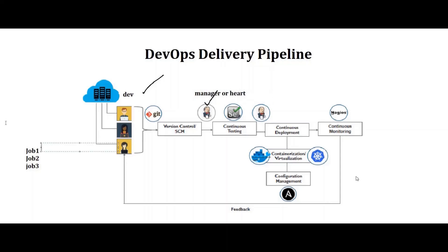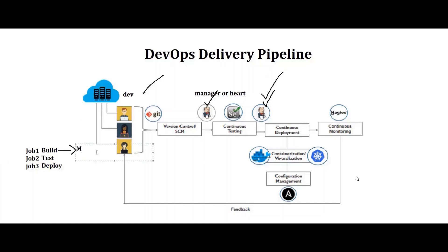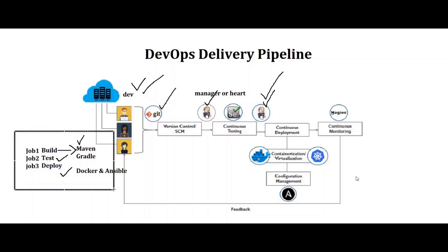In Jenkins, you can create jobs such as build, test, and deploy. Jenkins itself does not perform these tasks — rather, via Jenkins, we build using a build automation tool like Maven or Gradle. After successfully building the code, it tests using a continuous testing tool like Selenium. After that, it deploys using continuous deployment tools like Docker and Ansible. So the developer writes the code, places it in version control, and Jenkins runs the jobs: Maven builds it, Selenium tests it, and Docker or Ansible deploys it. Continuous deployment is a DevOps practice where code changes are automatically built, tested, and prepared for release to production.